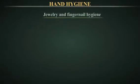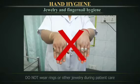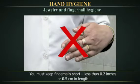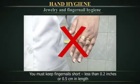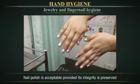Jewelry and fingernail hygiene: Wearing jewelry such as rings increases the bacterial load. Do not wear rings or other jewelry during patient care. Long fingernails have been associated with infection outbreaks of resistant pathogens in hospitals. As a result, you must keep fingernails short — less than 0.2 inches or 0.5 cm in length — and refrain from wearing artificial nails. Nail polish is acceptable provided its integrity is preserved. However, fingernail diseases such as onychomycosis should be promptly treated as they reduce the efficacy of hand hygiene.